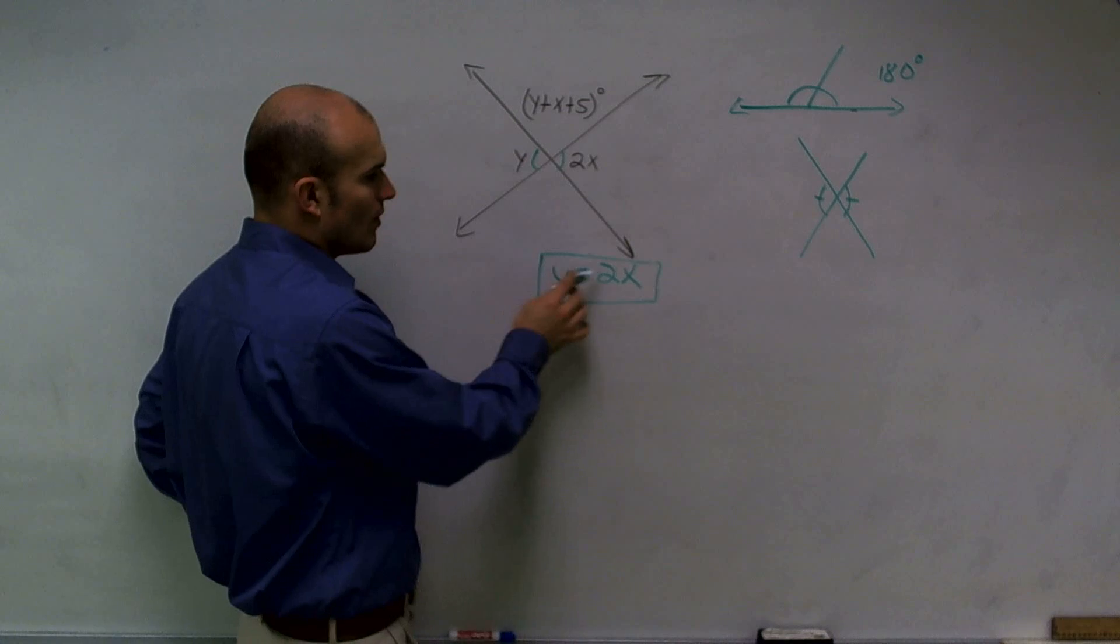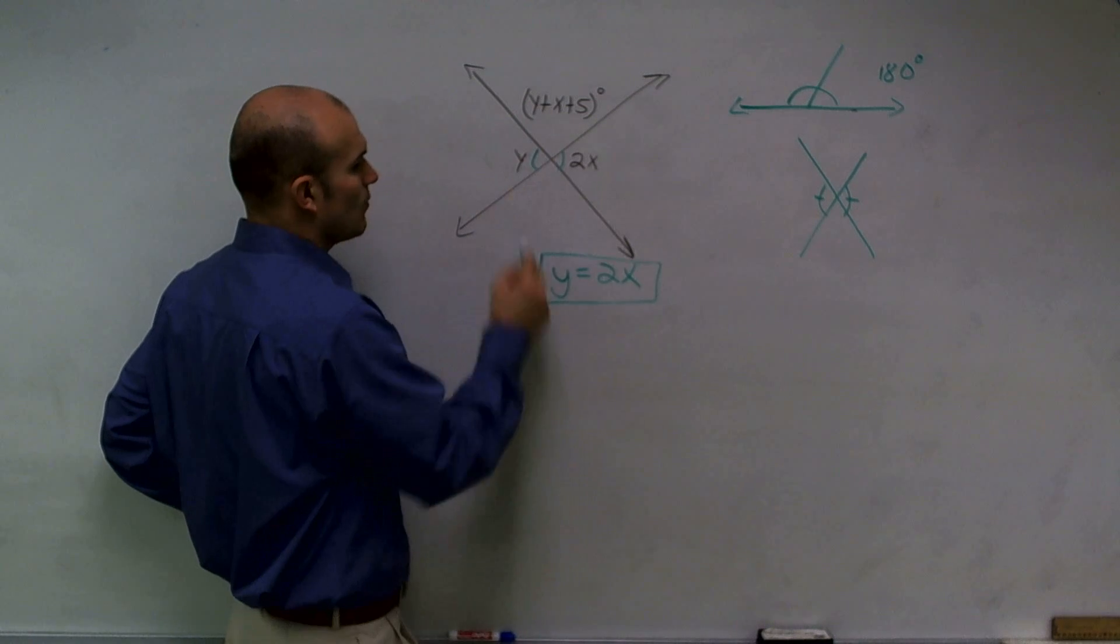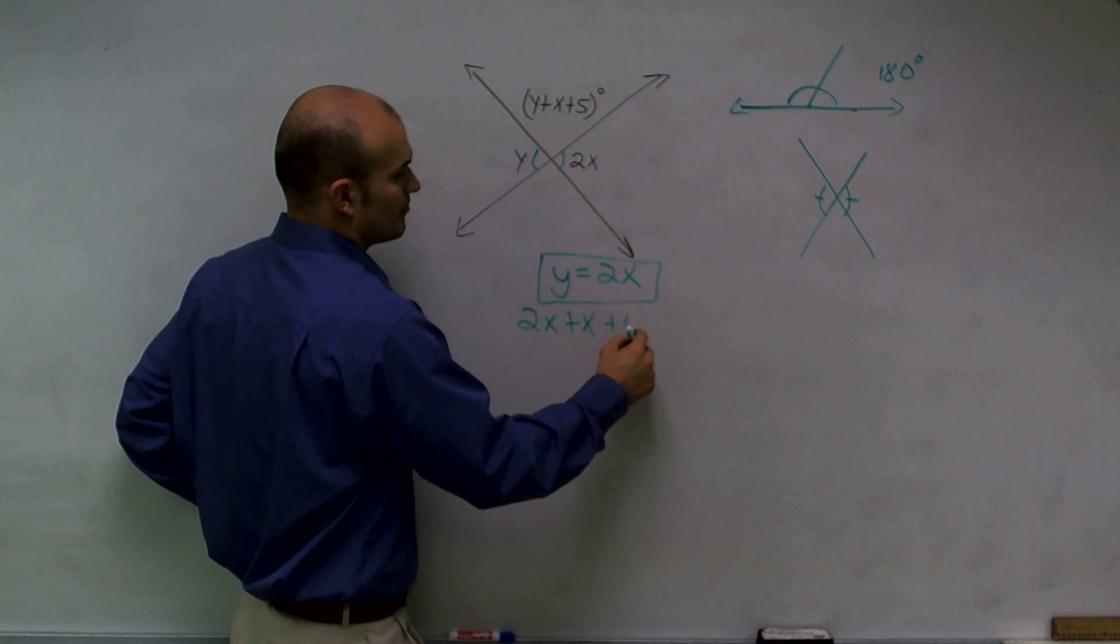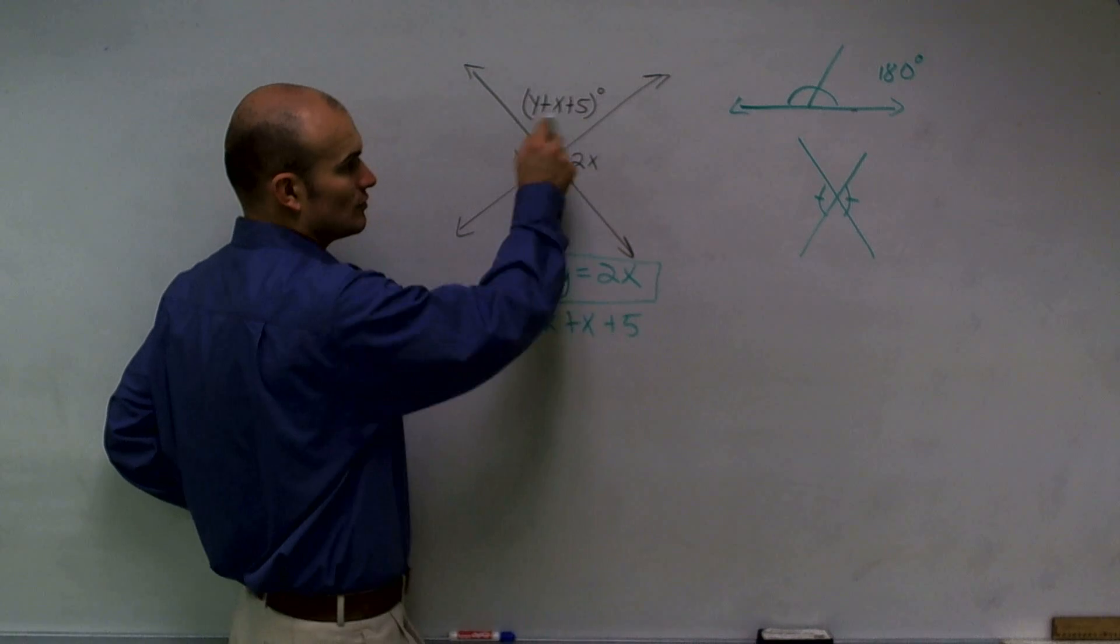If y equals 2x, then instead of writing y, I can write 2x plus x plus 5 equals this angle.